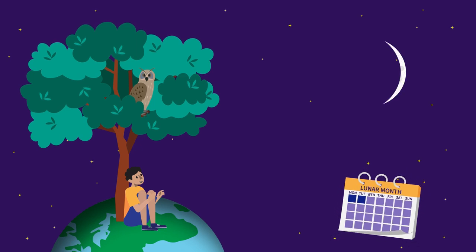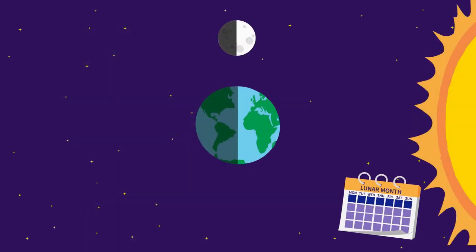The next night we can see a small part of it, and more and more as the nights pass. After a week, we see a half moon because in this phase, half of the moon's lighted side faces Earth—that's the first quarter phase.